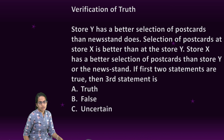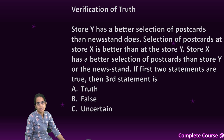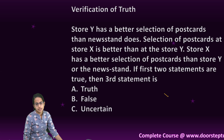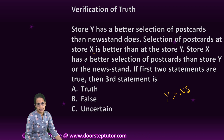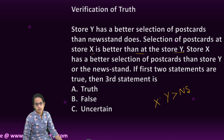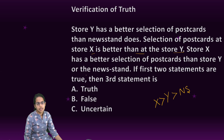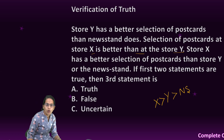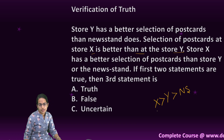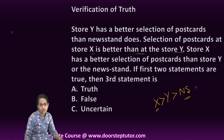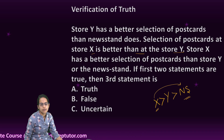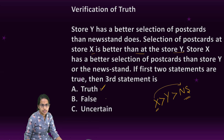Based on verification of truth: store Y has better selection of postcards than the newsstand, so Y is greater than newsstand. Selection of postcards at store X is better than store Y, so X is further better than Y. Therefore store X has better selection of postcards than the newsstand. So definitely I can say X has better selection than the newsstand. If the first two statements are correct, I can conclude that X has better collection than the newsstand, which is true — so this is a true statement.